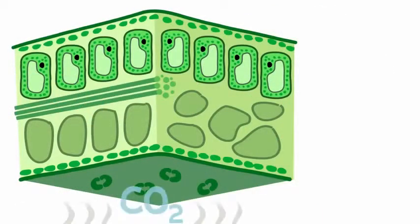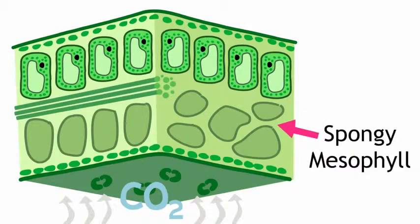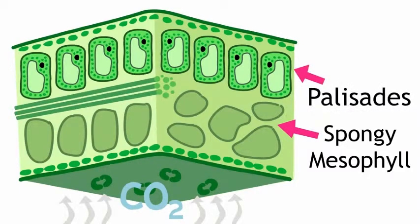So the carbon dioxide comes in through the stomata, makes its way through the gaps in an airy layer of cells called the spongy mesophyll at the bottom part of the leaf, and then heads up to the palisade layer for photosynthesis. Leaves are thin so that the carbon dioxide won't have too far to travel.